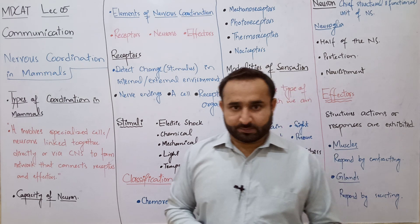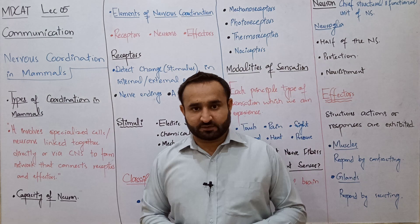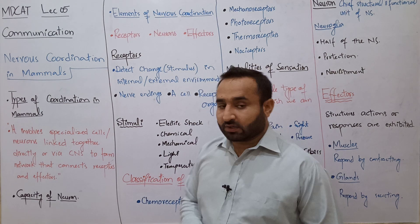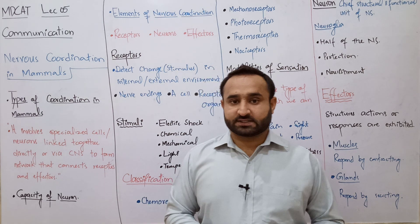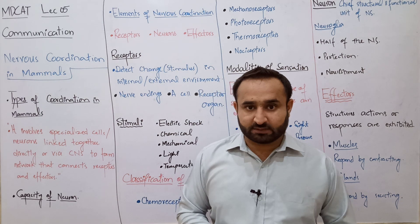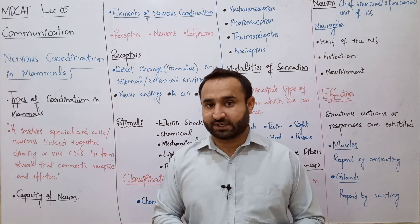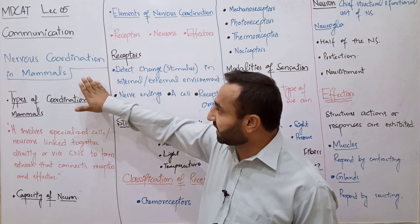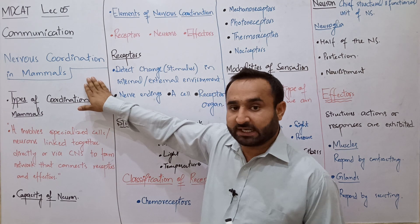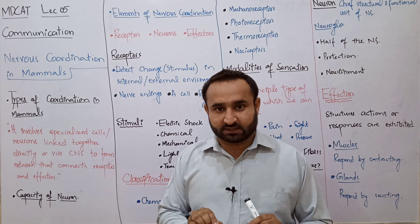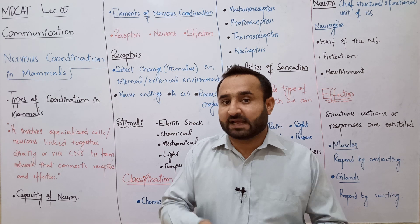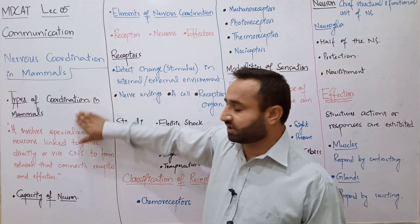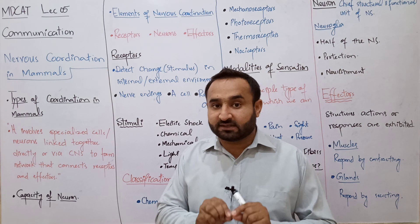Bismillahirrahmanirrahim. This is MCAT preparation lecture number five — biology preparation. We are going to discuss chapter number 17: biology coordination and control. Coordination can also be called communication. Our topic is nervous coordination in mammals — those animals which give birth to young ones and feed them milk.